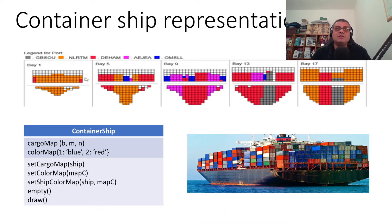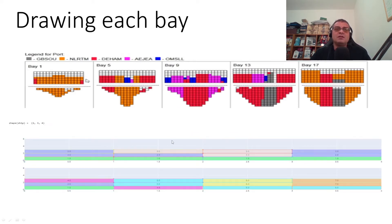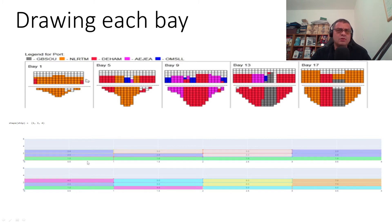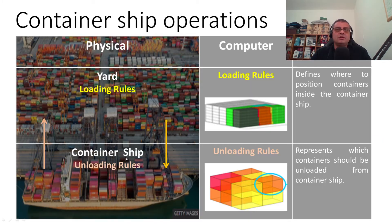This is the container ship class that we developed in the first track. It represents a container ship, and this is the kind of picture we can draw using this class — each bay of the ship drawn as a rectangular picture.